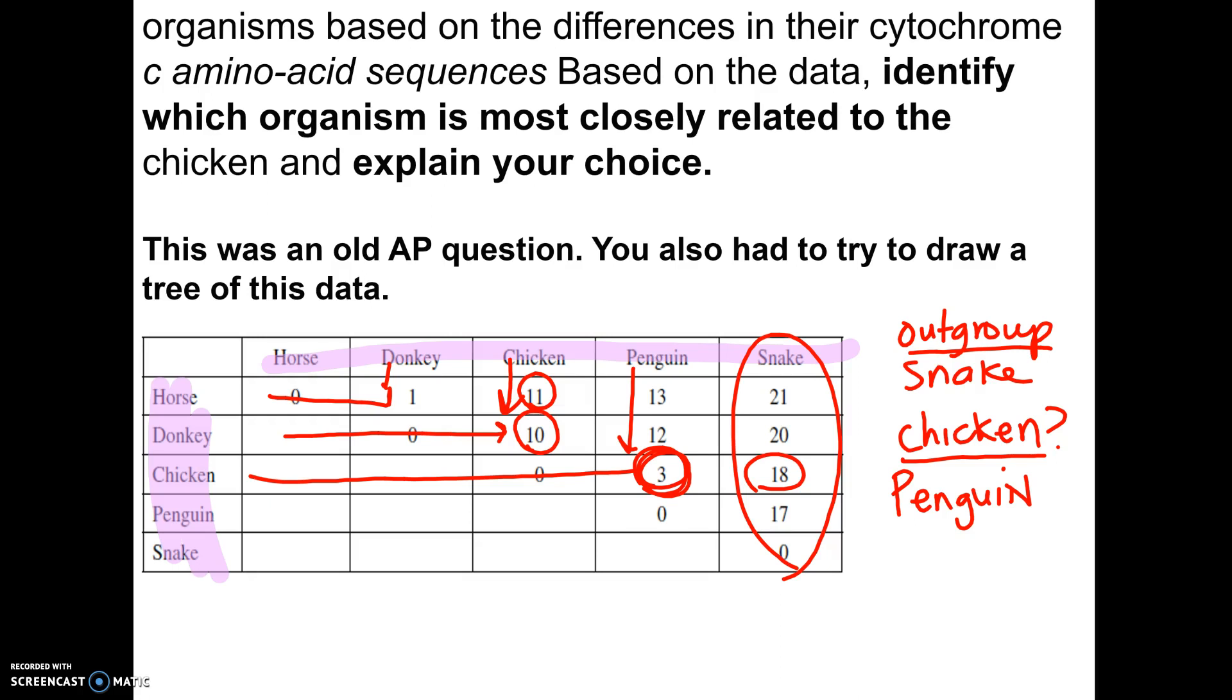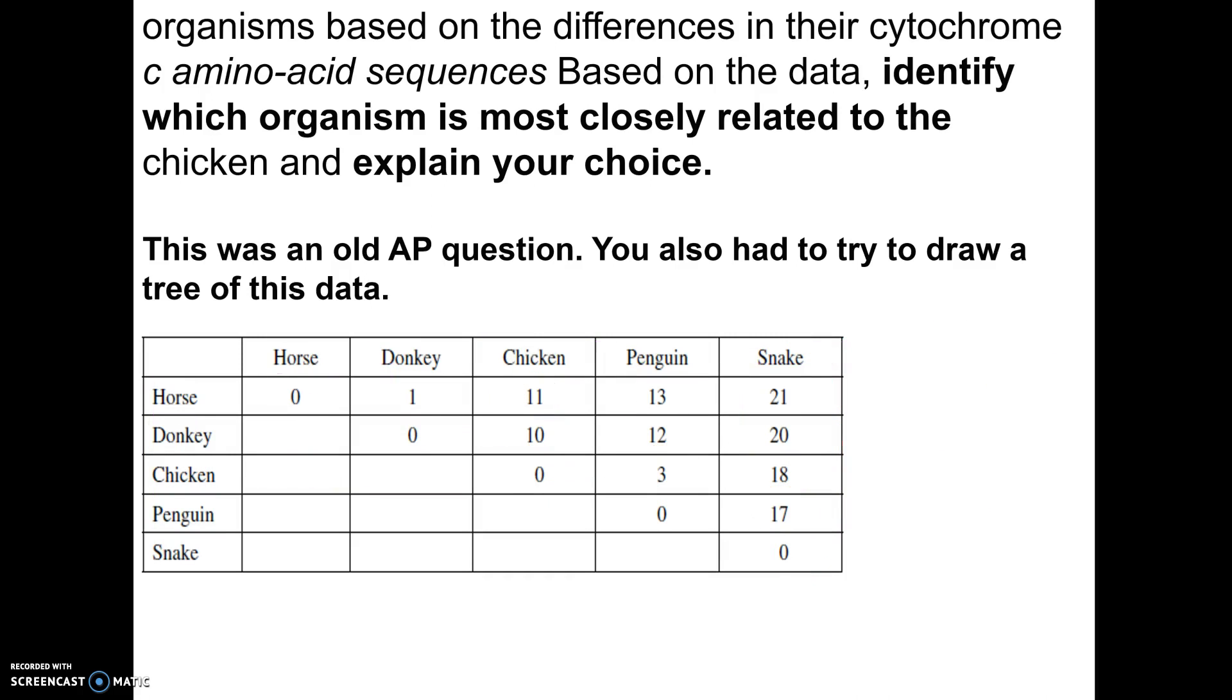And finally, you were actually asked to draw a tree. This was a very old AP question. I have not seen something like this in a really long time. Honestly, the easiest thing to do, you want your snake to be the outgroup. So somewhere down at the bottom, the snake. And again, this could be sloppy. I'm going to make it really sloppy just to show you this was absolutely fine. The horse and the donkey only have one difference between them. So they'd go here together. And then finally, since the chicken and the penguin were somewhere in the middle, but they were really close to each other, you could put them sort of like this, chicken and penguin.